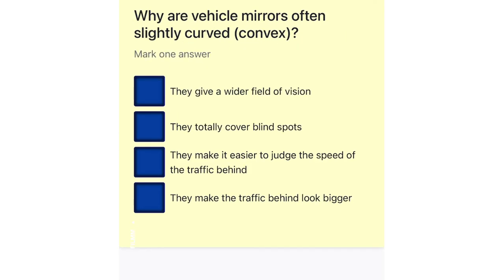Why are vehicle mirrors often slightly curved (convex)? They give a wider field of vision. They totally cover blind spots. They make it easier to judge the speed of the traffic behind. They make the traffic behind look bigger.